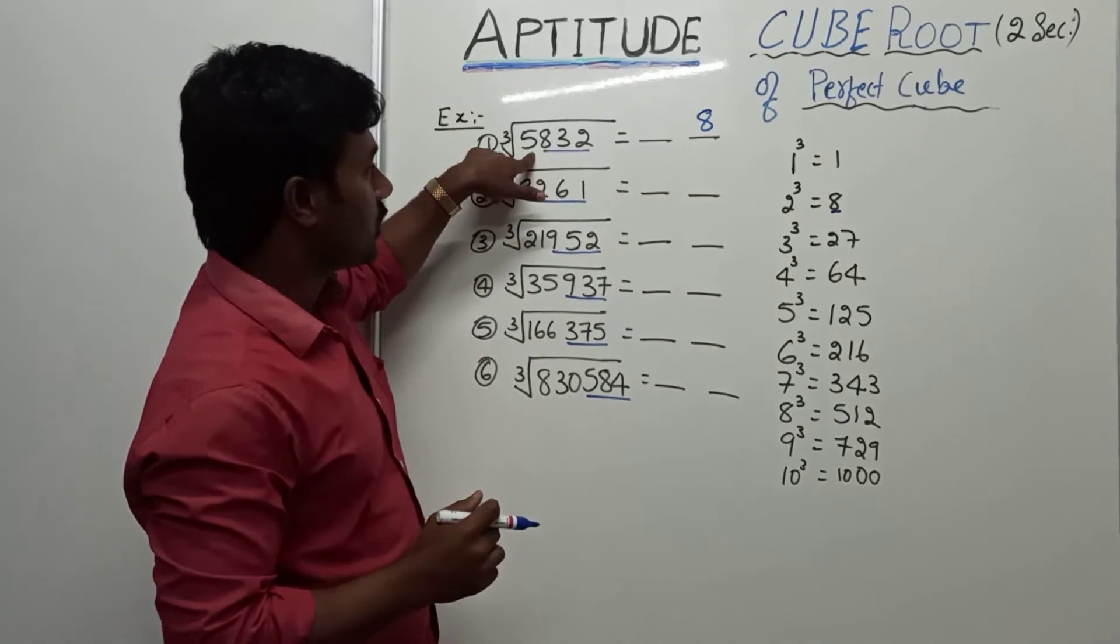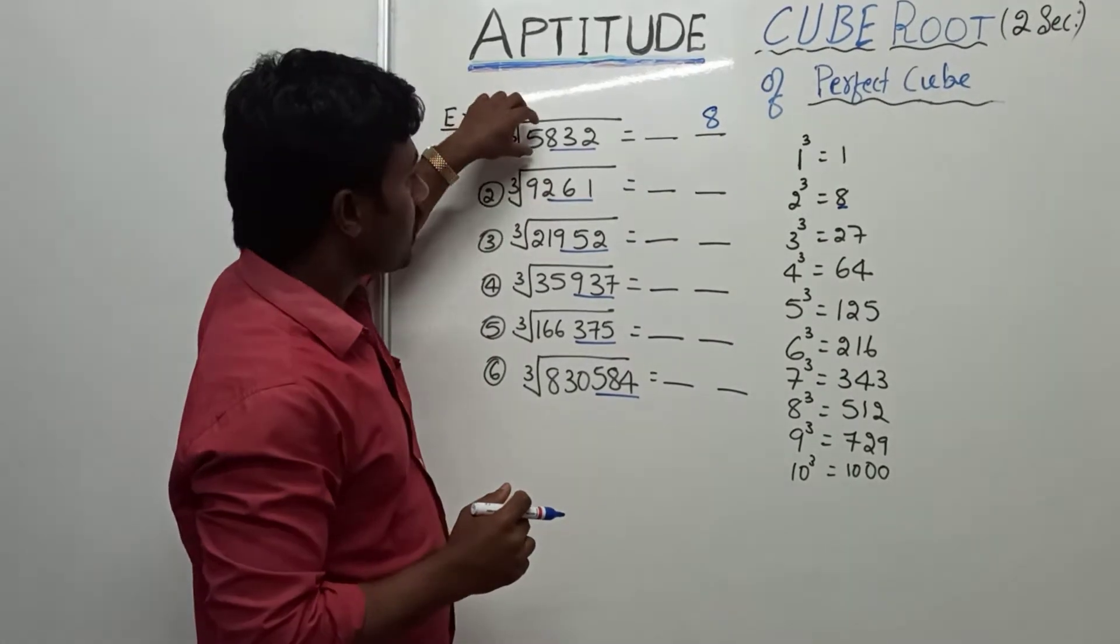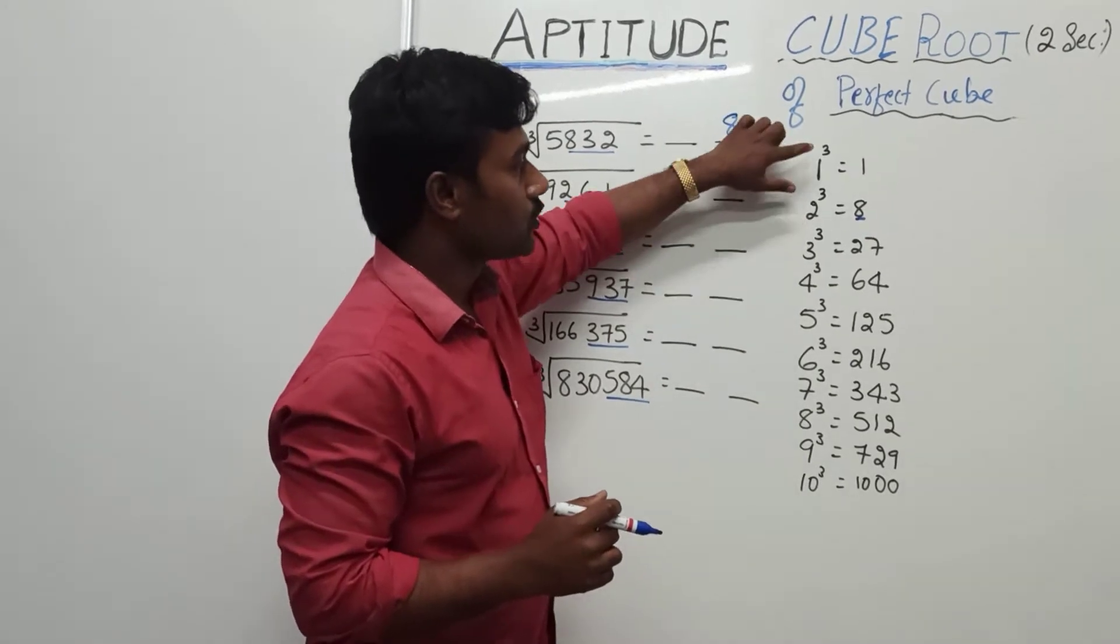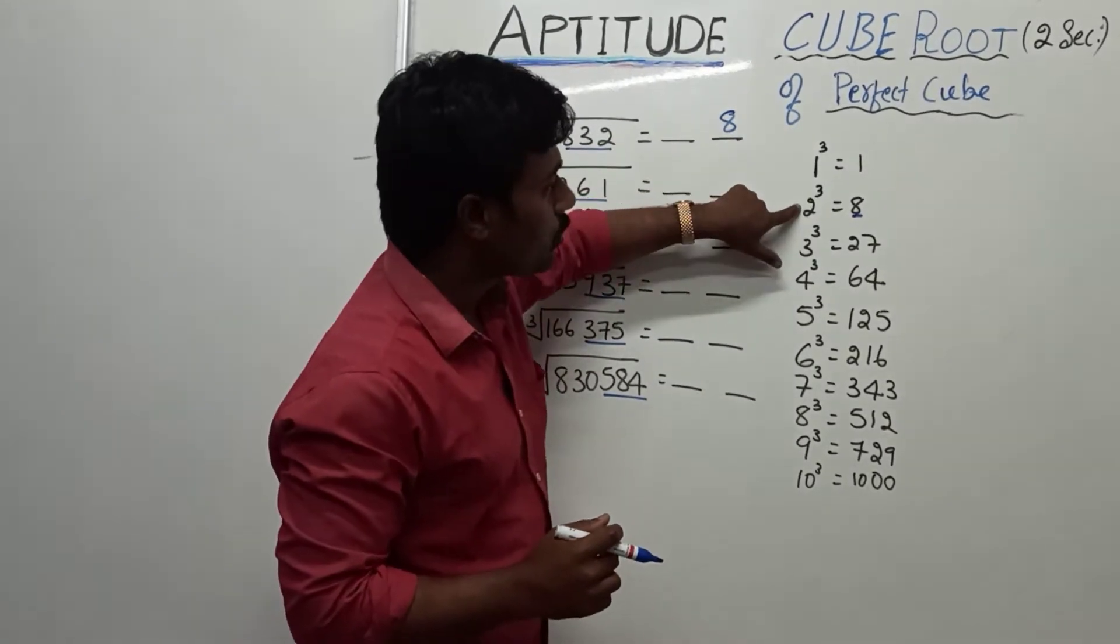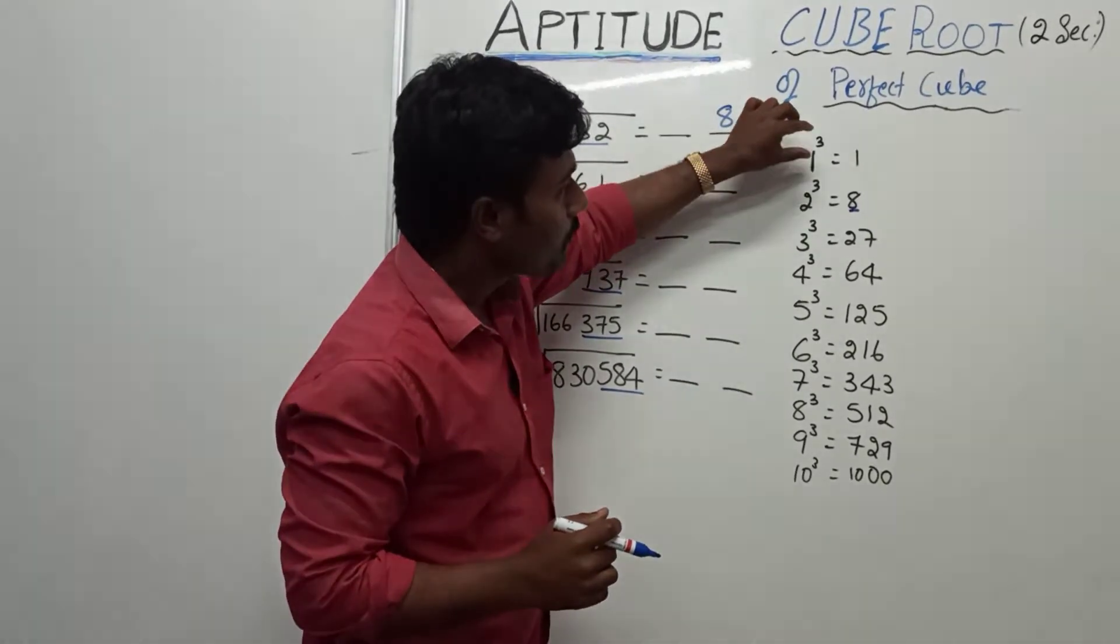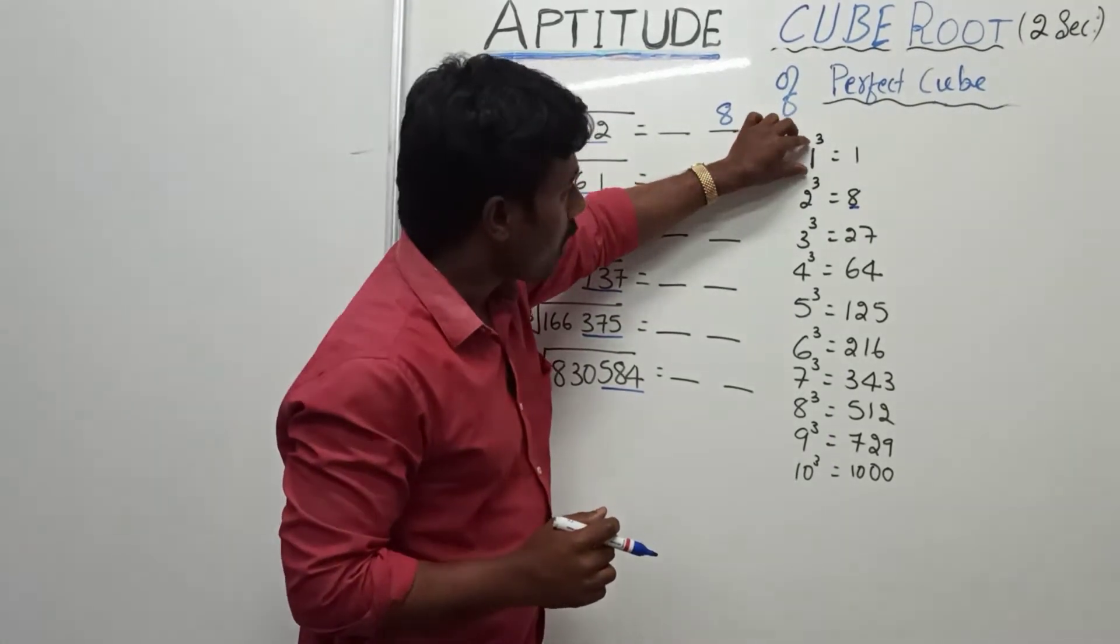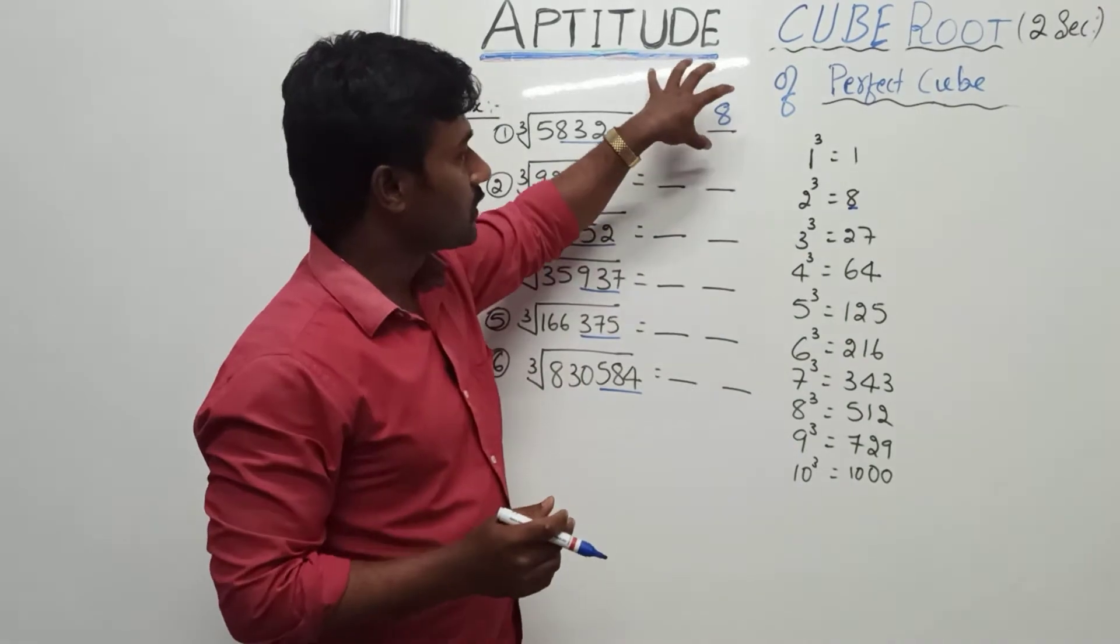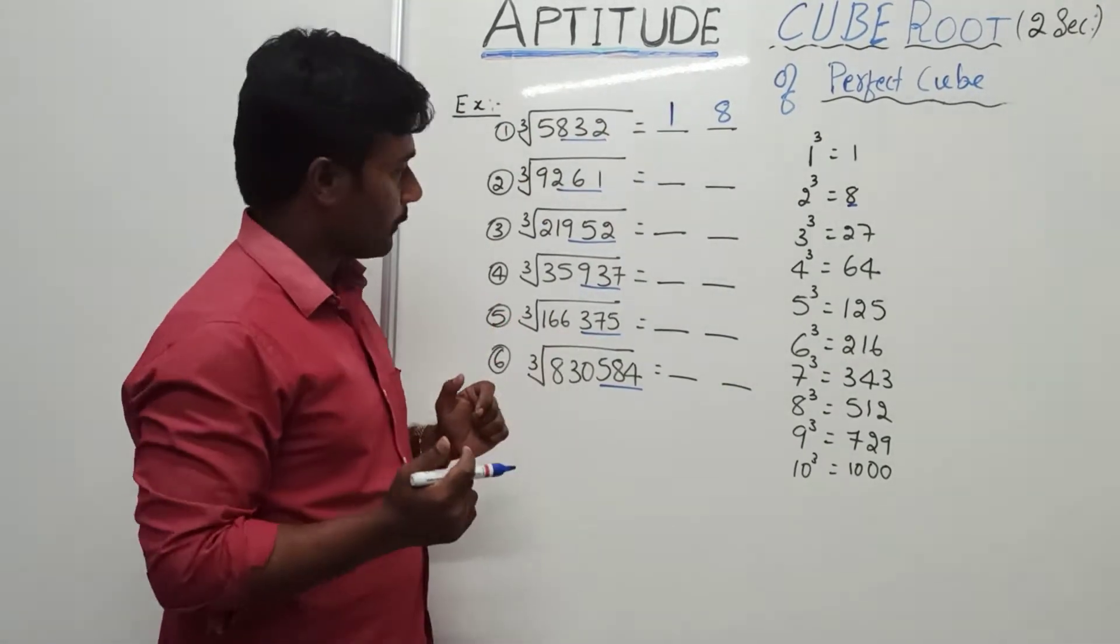Then, come to this 5. 5 lies between 1 cube and 2 cube. So it lies between 1 cube and 2 cube, means the minimum base of the cube. So 1, that you write in the tens place. This is the cube root of this perfect cube. That's all.